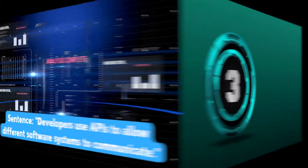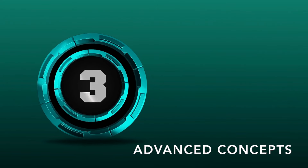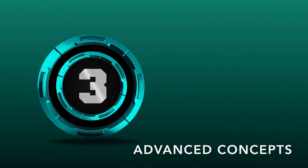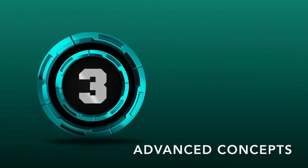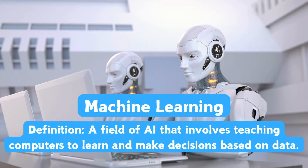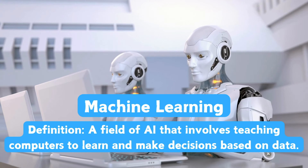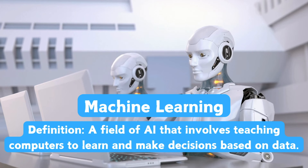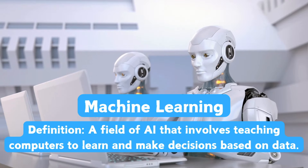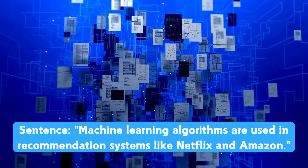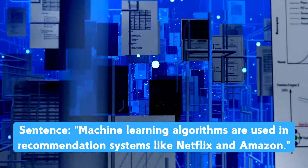Ready to take it up a notch? In the next section, we'll explore some advanced concepts that are shaping the future of technology. These terms might sound complex, but don't worry, I'll break them down so they're easy to grasp, even if you're not new to the field. First up, we have Machine Learning. Machine Learning is a field of AI that involves teaching computers to learn and make decisions based on data. Machine Learning algorithms are used in recommendation systems like Netflix and Amazon.